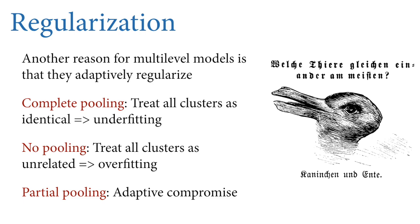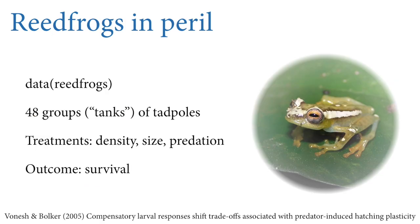The compromise solution is called partial pooling, where the model tries to adaptively learn the amount of variation in the population of cafes, individuals, or stories. Let me show you what this looks like. I'm going to use a data example — the same one I use in the book to motivate multilevel models. It's a relatively small data set of 48 rows, available as reedfrogs in my rethinking package. Each row is a group of tadpoles — experimental tanks.